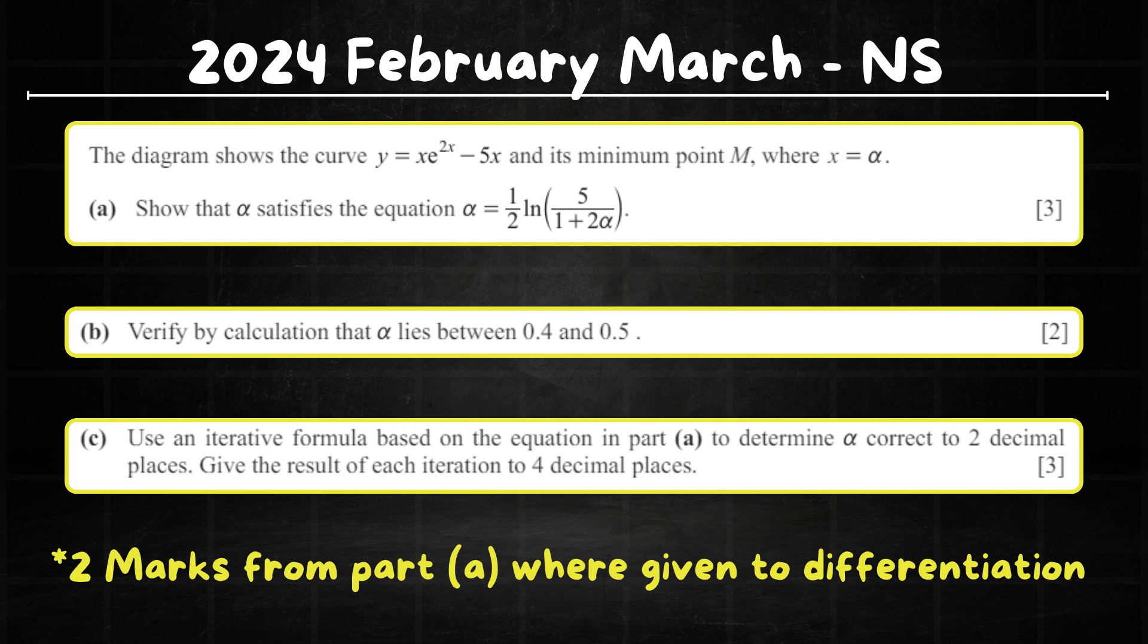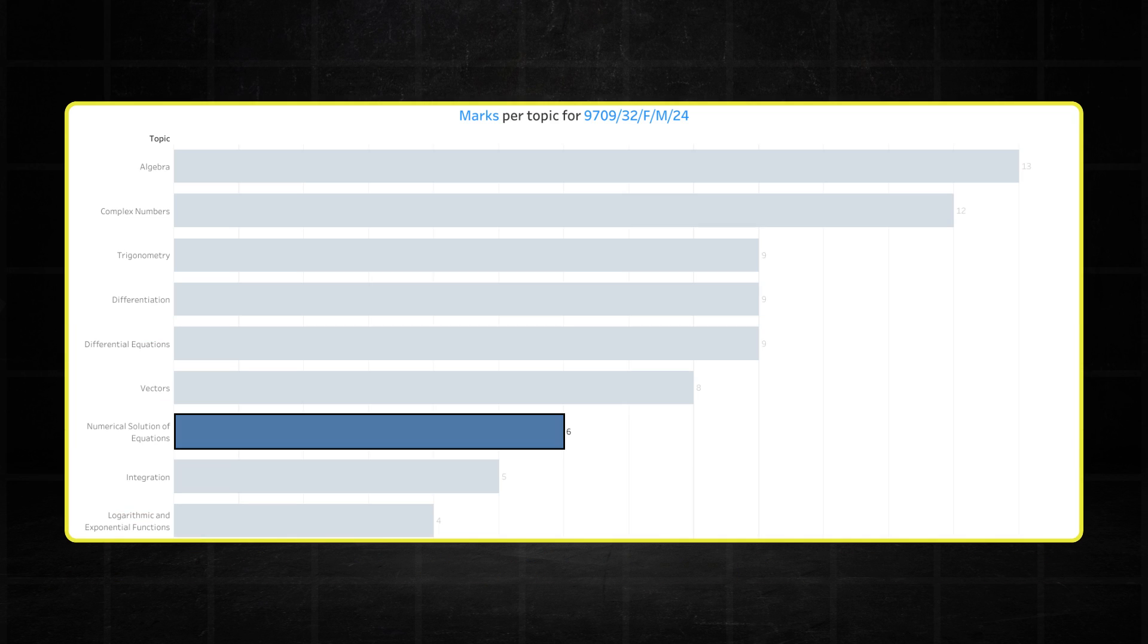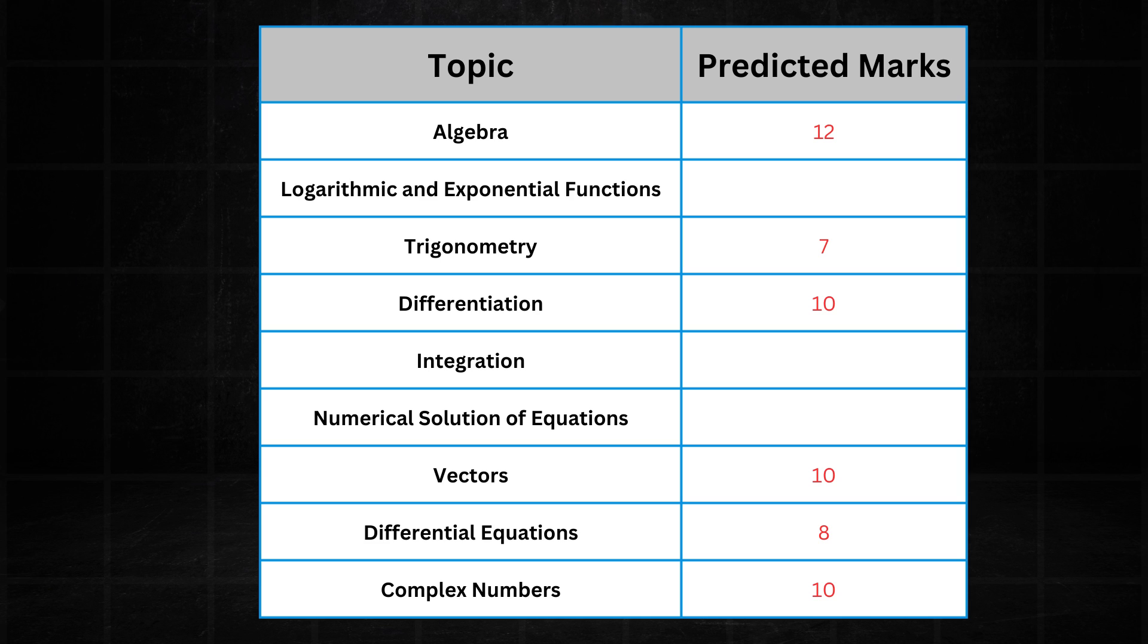Numerical solutions had a pretty average showing with 6 marks. Nothing to scream about. And I expect more of the same in the May-June series. It's one of those topics that typically only get one question per paper. So it should probably be averaging around 7 marks per paper in the May-June series.